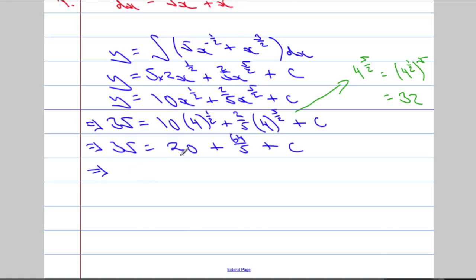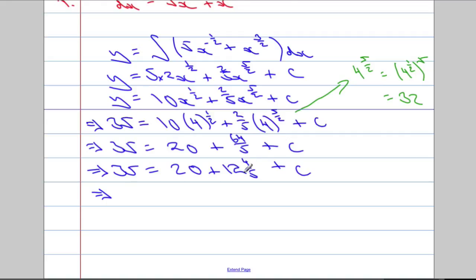Let's do a little bit of tidying up. 64 divided by 5 is 12 and 4 fifths. It's going to equal 35, which means 20 and 12 is 32 and 4 fifths. So 32 and 4 fifths taken away from 35 is going to give us 2 and 1 fifth. So 2 and 1 fifth equals C — or 11 over 5. I'm going to leave it as a top-heavy fraction: C equals 11 over 5.